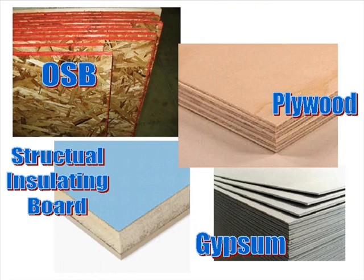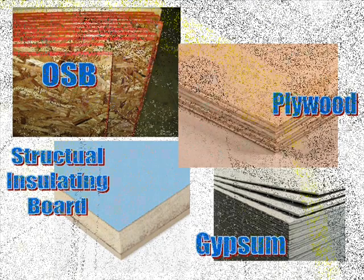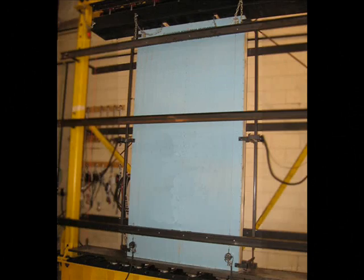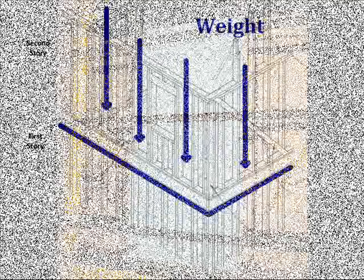Typical panel materials tested by this method are plywood, gypsum, and structural insulated board. However, any structural sheeting product as defined by applicable building codes may be tested to ensure structural adequacy and service life.